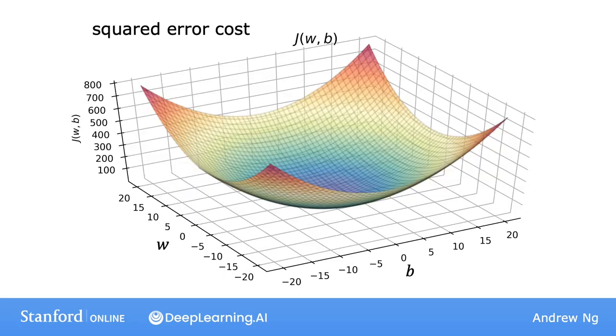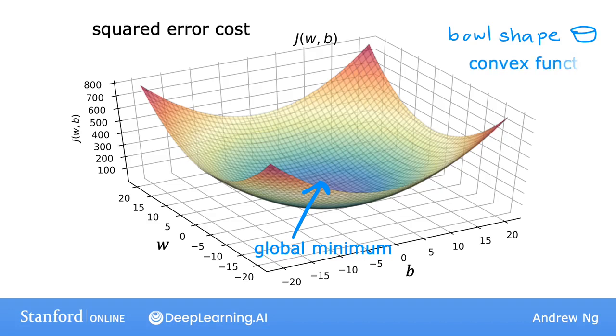But it turns out when you're using a squared error cost function with linear regression, the cost function does not and will never have multiple local minima. It has a single global minimum because of this bowl shape. The technical term for this is that this cost function is a convex function. Informally, a convex function is a bowl-shaped function, and it cannot have any local minima other than the single global minimum.